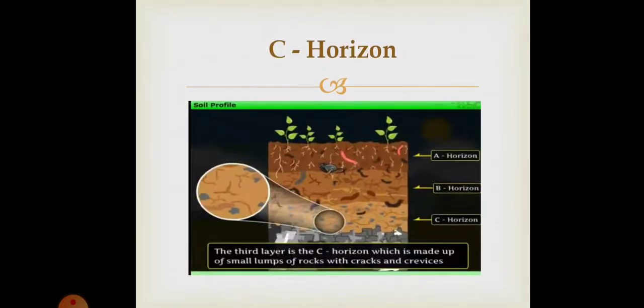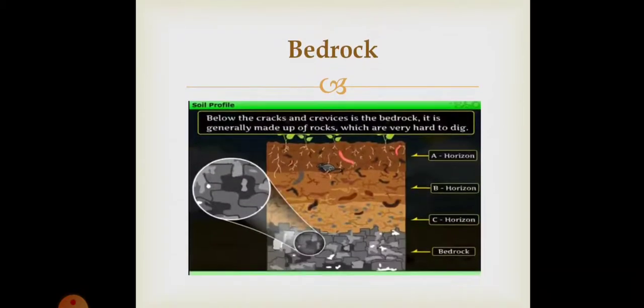C horizon: the third layer is the C horizon, which is made up of small lumps of rocks with cracks and crevices. Below this is the bedrock or the parent rock. It is generally made up of rocks which are very hard to dig.